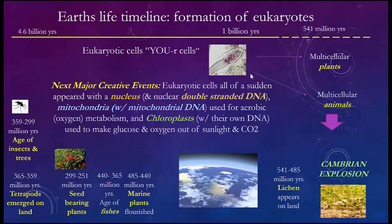Once you've accomplished that, one form will have the nucleus, mitochondria, and chloroplasts and become plants. The others will have the nucleus and mitochondria — they drop the chloroplasts — and become animals. Anything green has chloroplasts. About a billion years later, at 541 million years, you have what's called the Cambrian Explosion, where all of the living creatures on Earth suddenly unfold.